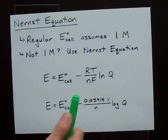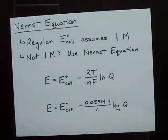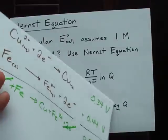So, okay. E naught cell is the cell potential you found in your previous question, when you added the cell potentials of each half reaction.